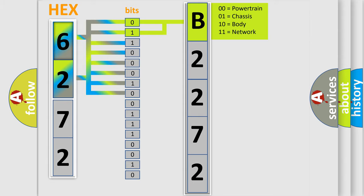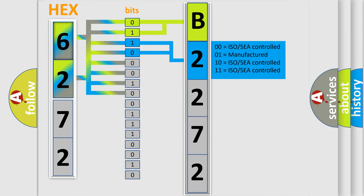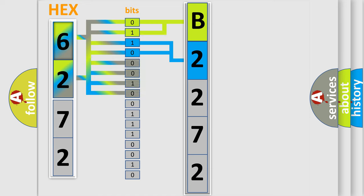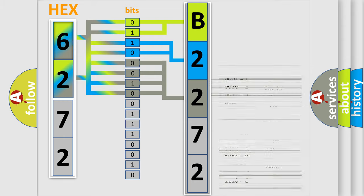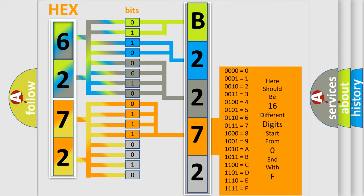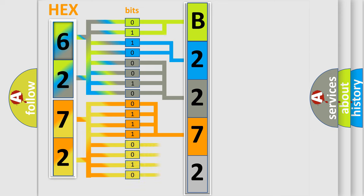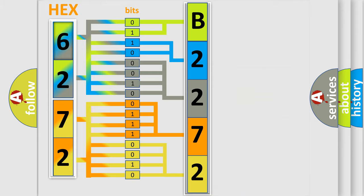By combining the first two bits, the basic character of the error code is expressed. The next two bits determine the second character. The last bits of the first byte define the third character of the code. The second byte is composed of a combination of eight bits. The first four bits determine the fourth character, and the combination of the last four bits defines the fifth character. A single byte conceals 256 possible combinations.